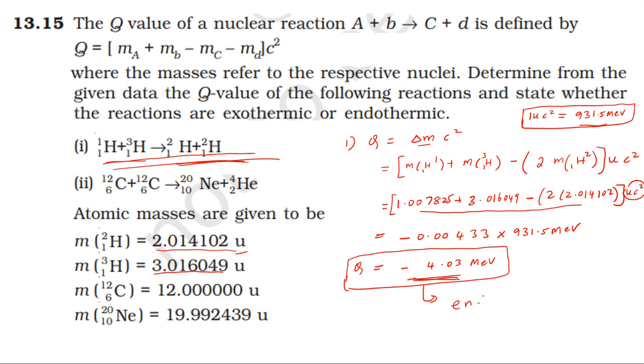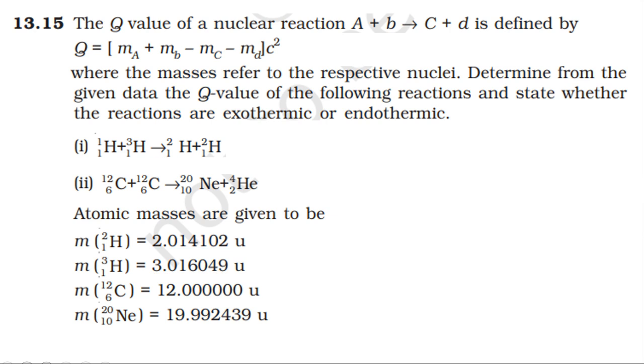Second one: carbon C12 gives neon Ne20 plus helium He4. Q equals delta M C squared. That's mass of carbon C12 minus mass of neon Ne20 minus mass of helium He4 into atomic mass units into C squared.